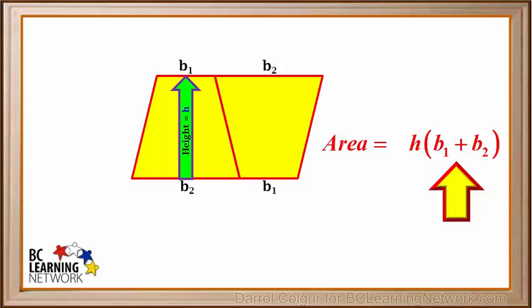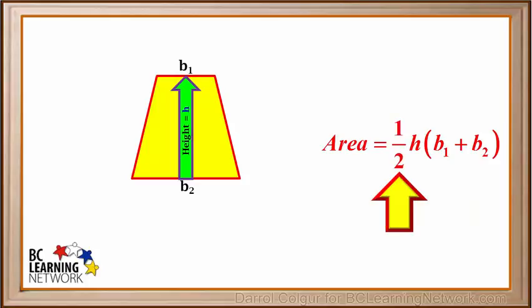But remember, this parallelogram was made by bringing two identical trapezoids together. If we remove the second trapezoid, the area will be one half of what it was when it was a parallelogram. So the area of our trapezoid is one half times H times (B1 plus B2).